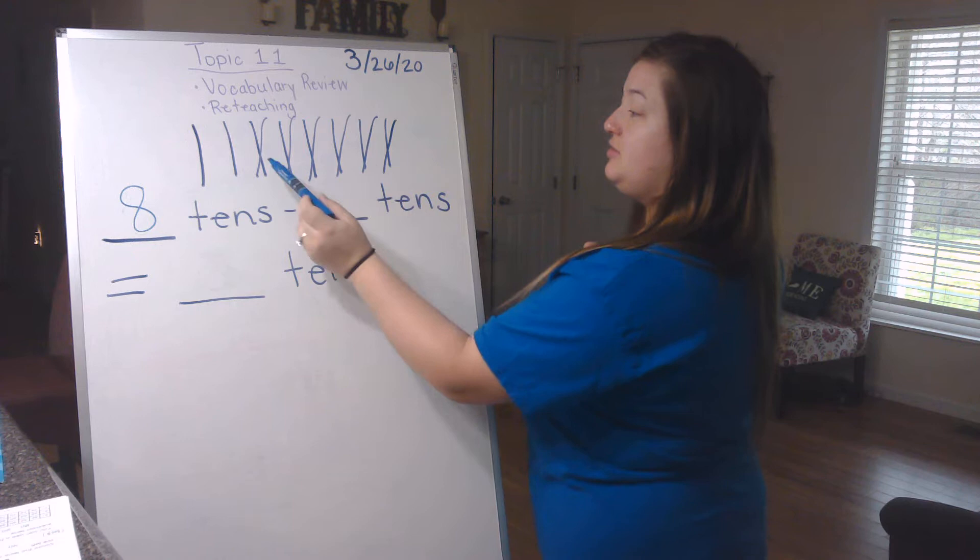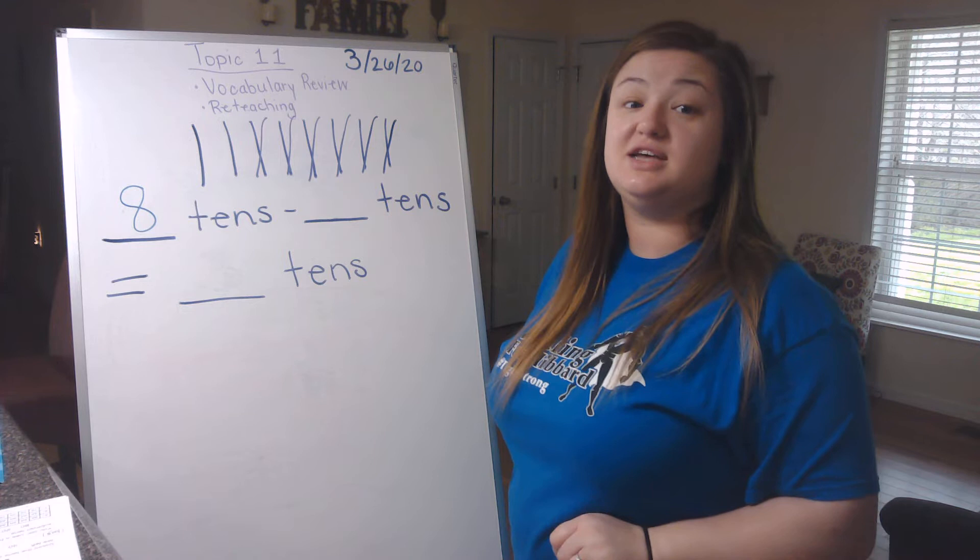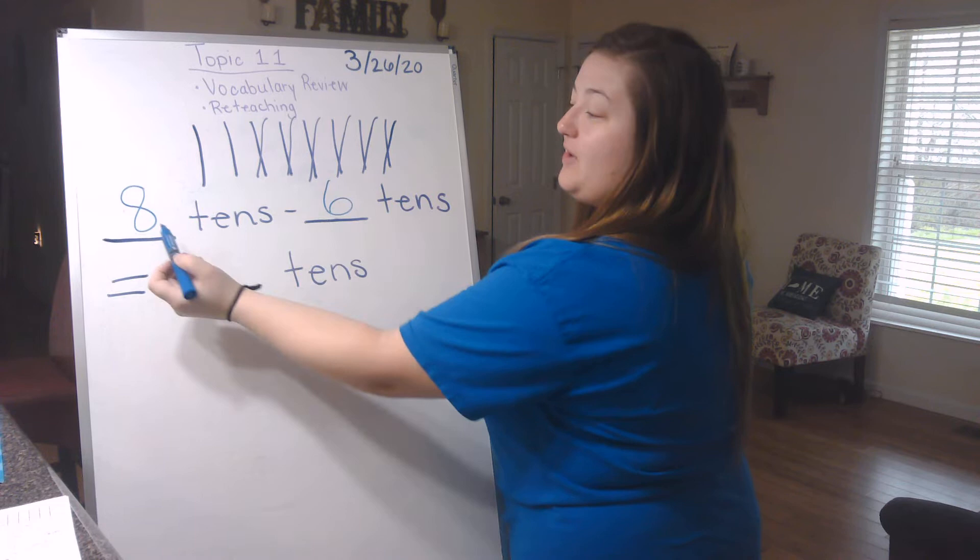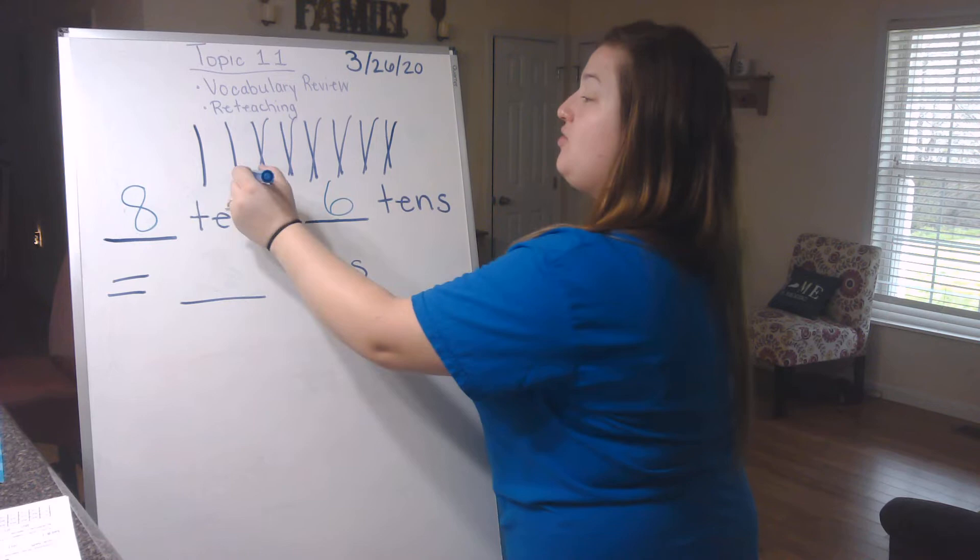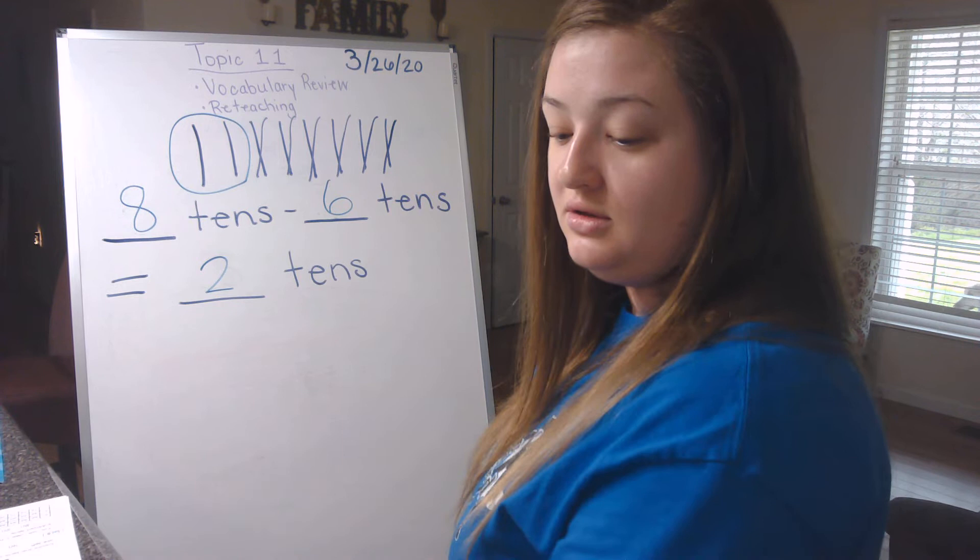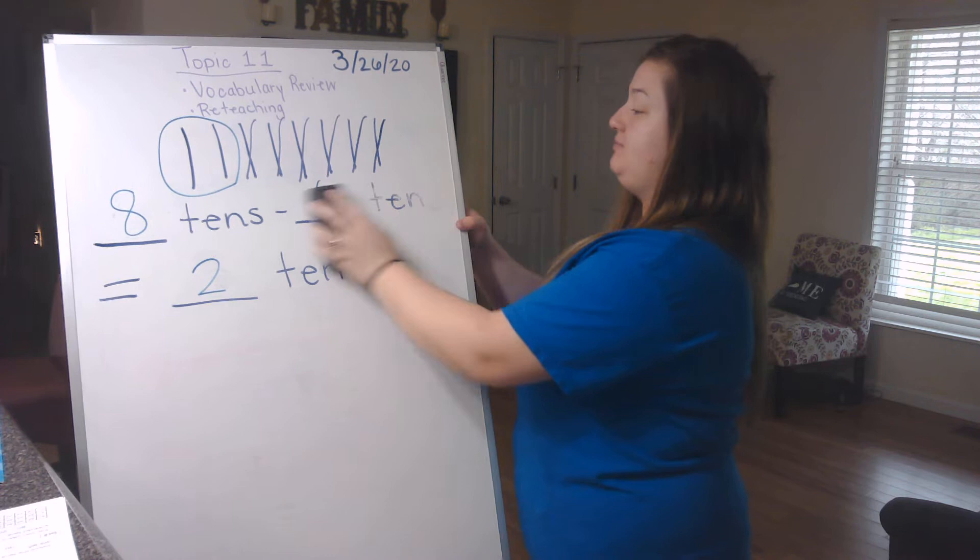And then how many tens have a line through them? Go ahead and count those on your own. On the count of three, I want you to whisper how many tens have a line through them. One, two, three, six. It's like I can hear you guys coming through my speaker. So six tens have a line through them. So eight tens, subtract six tens, equals how many tens left without a line through them? And if I circle them so you can see them just a little bit better, I have two tens left.